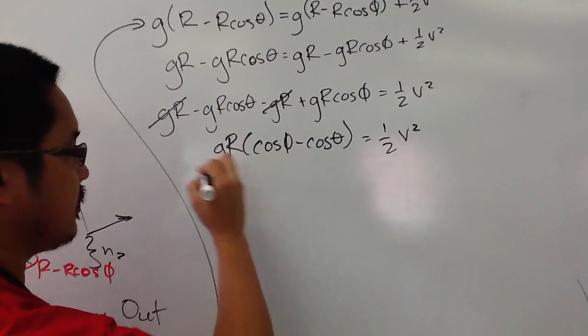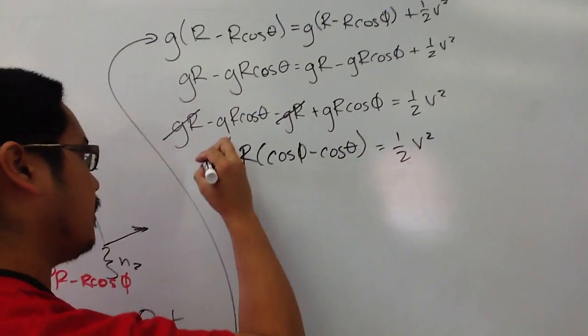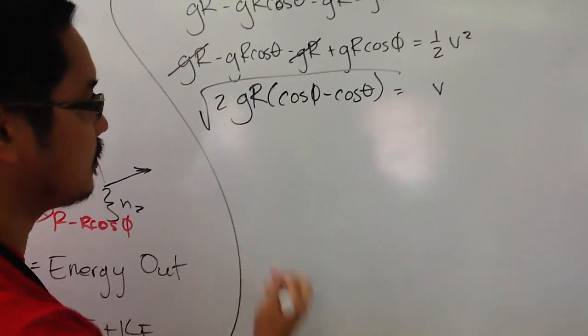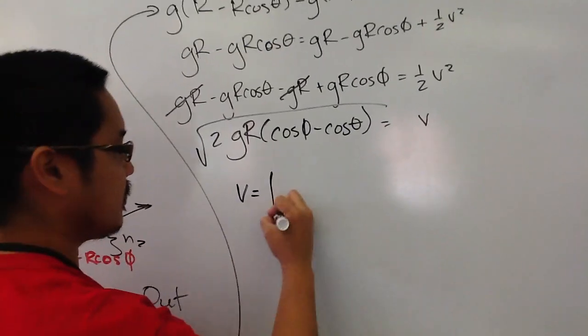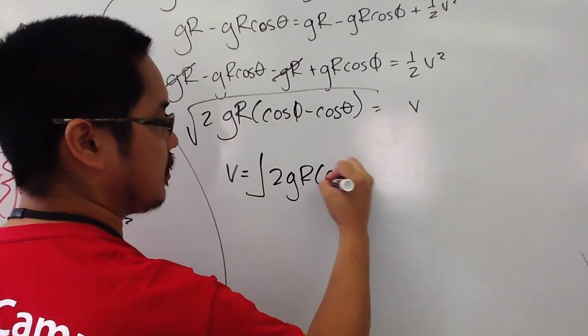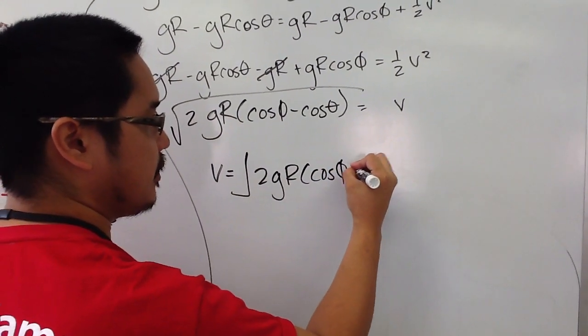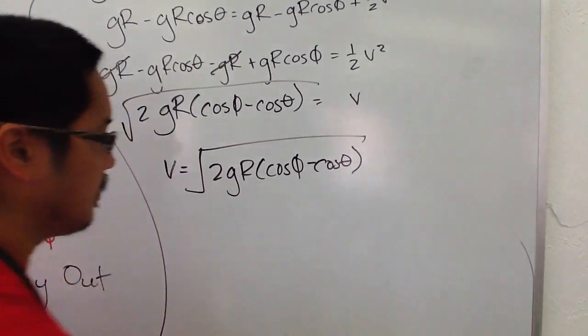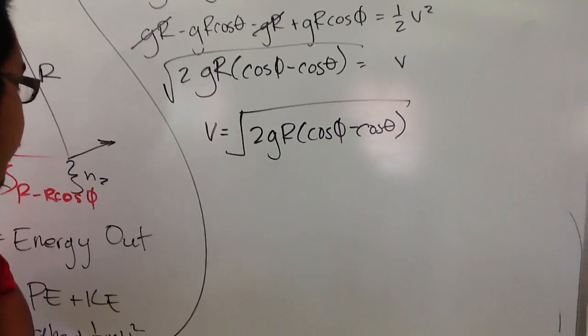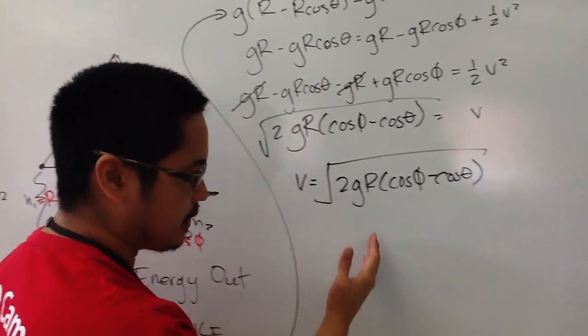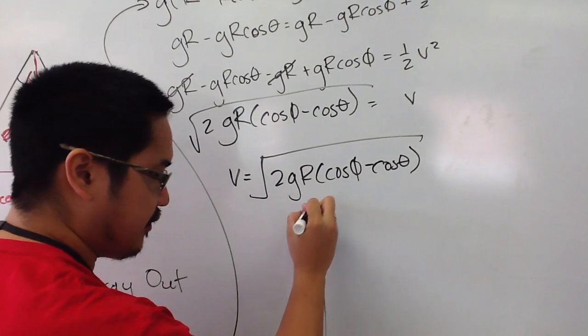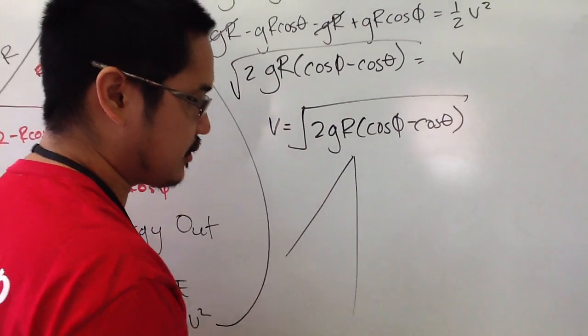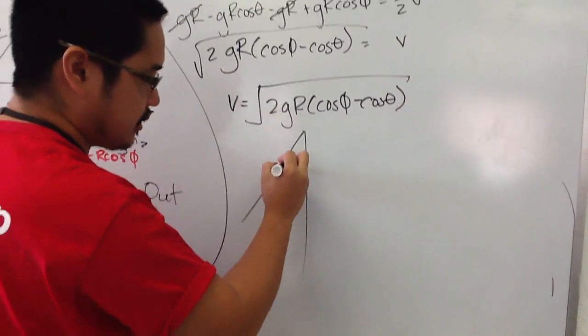I'm going to simplify this a little bit. I'm going to factor out a g and r. So I really have just gr times cosine phi minus cosine theta. Cool. You're welcome. All right, equals one-half of v squared. Yay? Yeah. All right. So for v squared, right? Kick that guy up. You have a 2 up here. Take the square root of both sides. There's your answer. So v equals the square root of 2gr cosine phi minus cosine theta. Cool? All right. Yeah. And phi is the angle that you defined this initially at. I had you measure that a bunch of times, I guess. I forgot what the answer was.